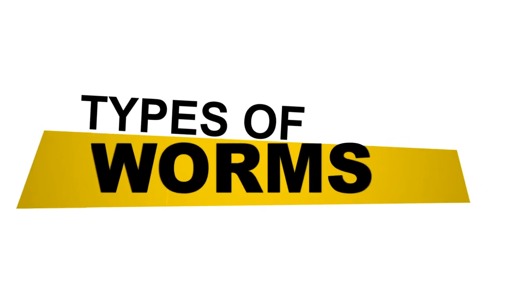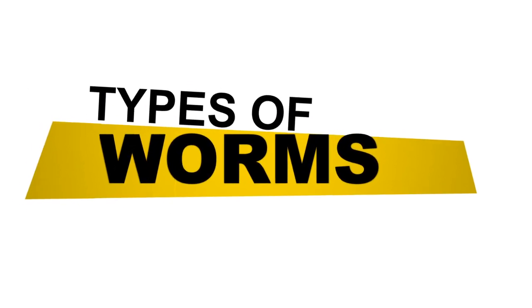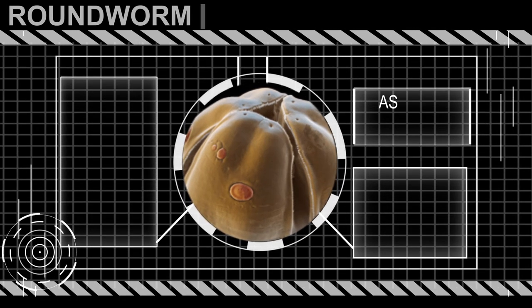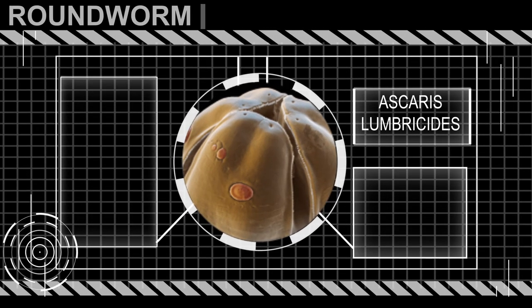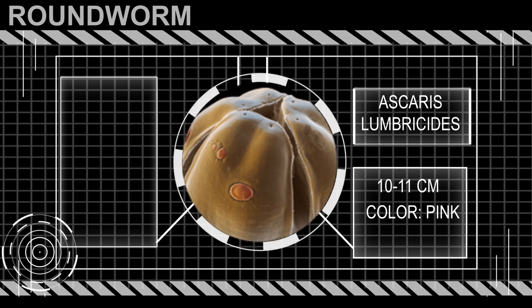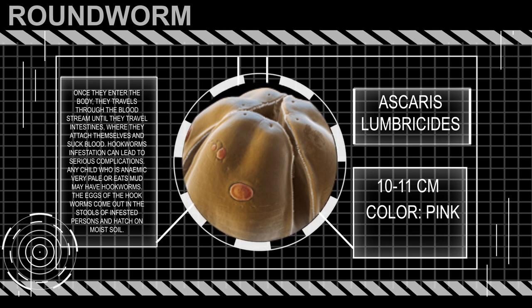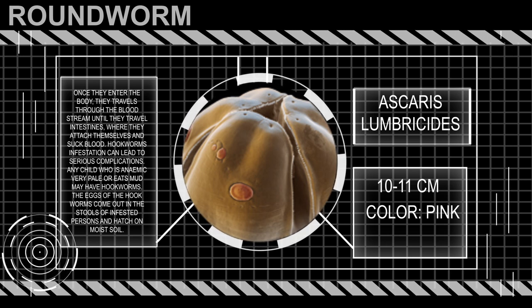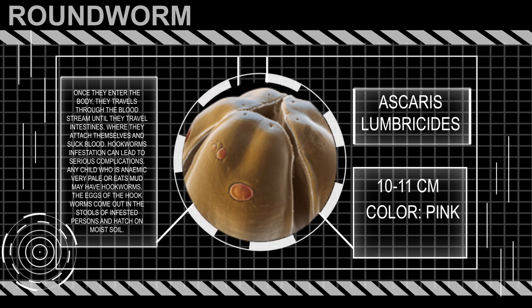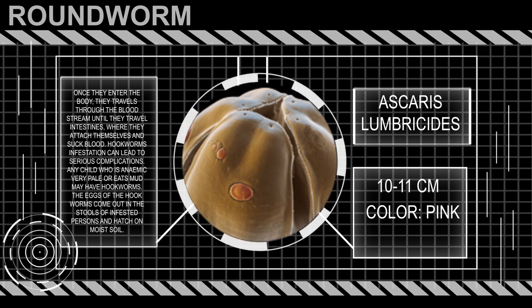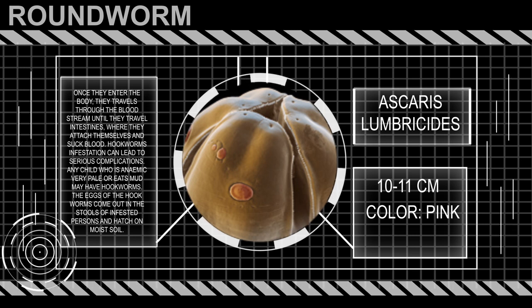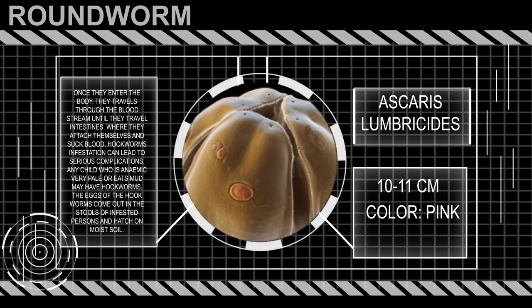There are three types of worms common among children. Type 1: Roundworms, known as Ascaris. They are 10 to 11 cm long and pink in colour. They get mixed in soil and get into the body when children play with sand.